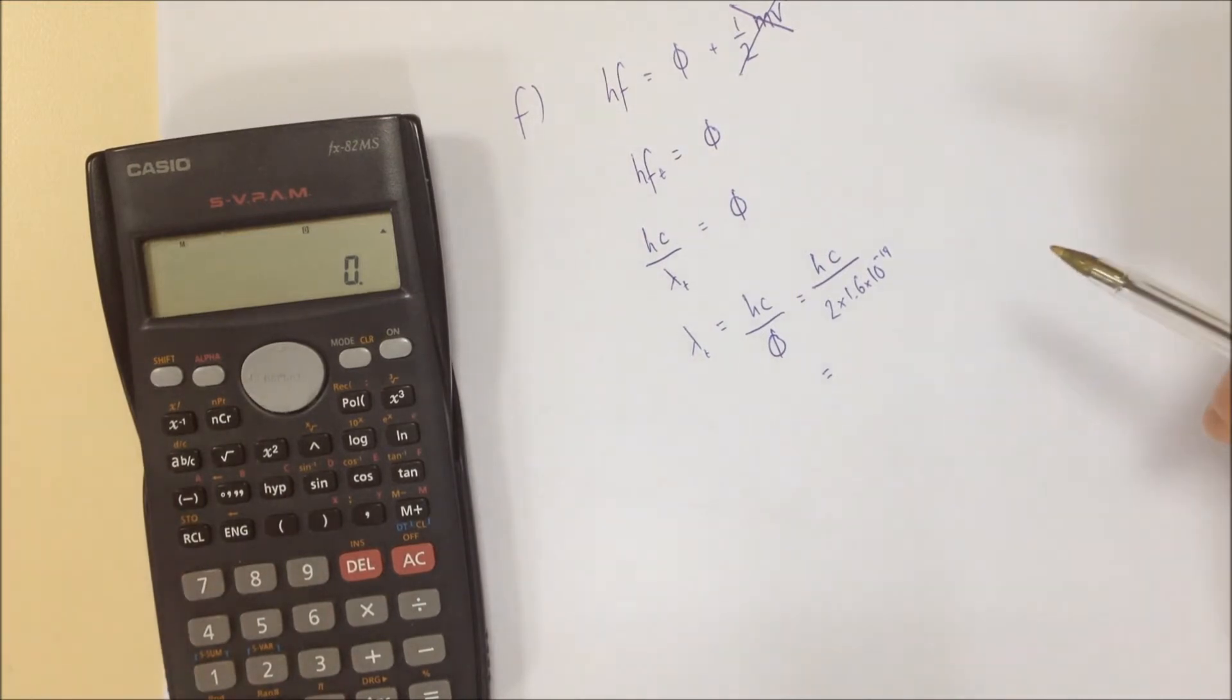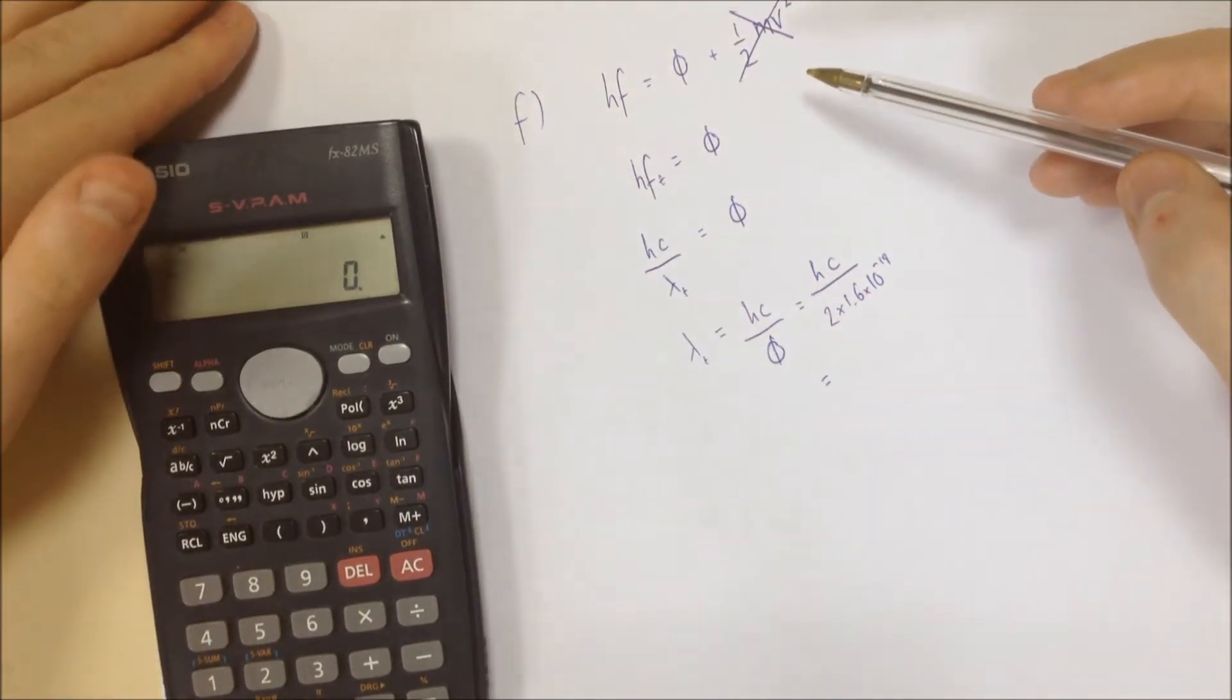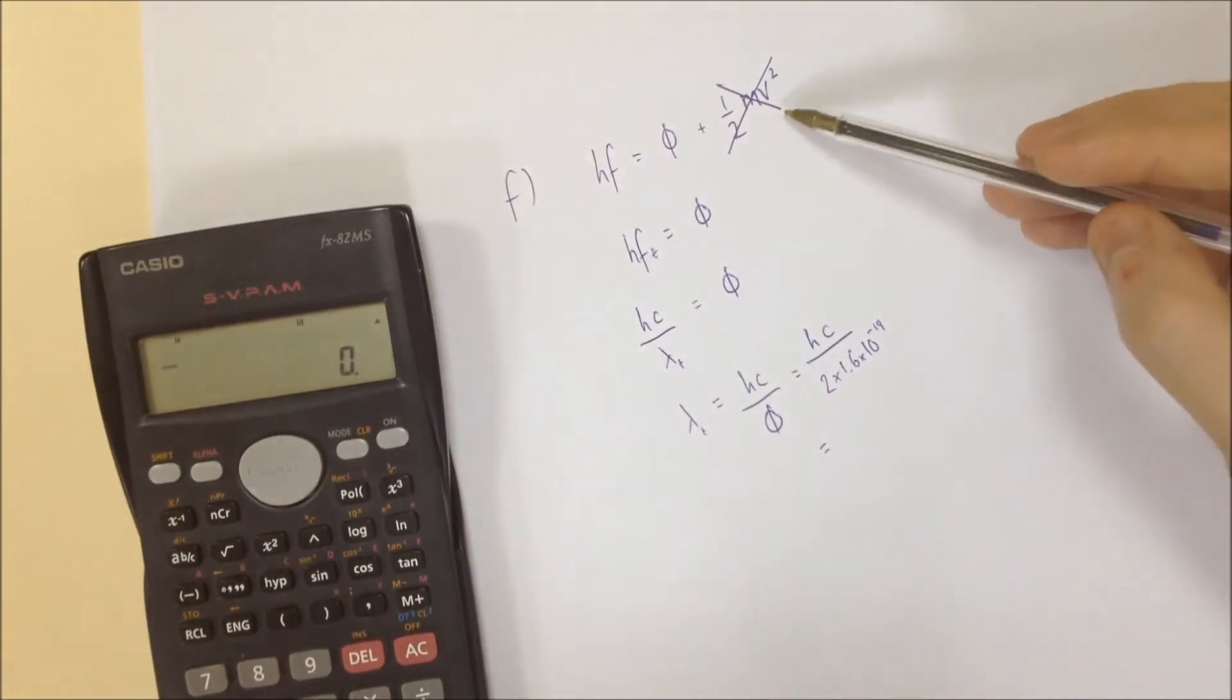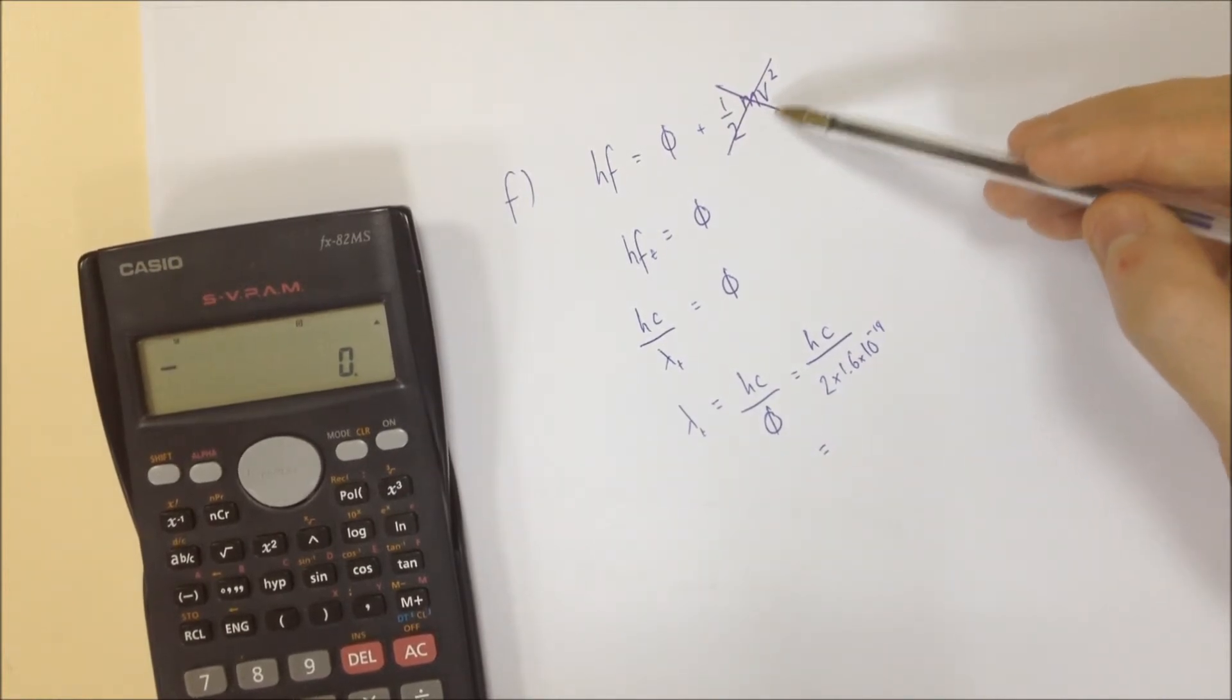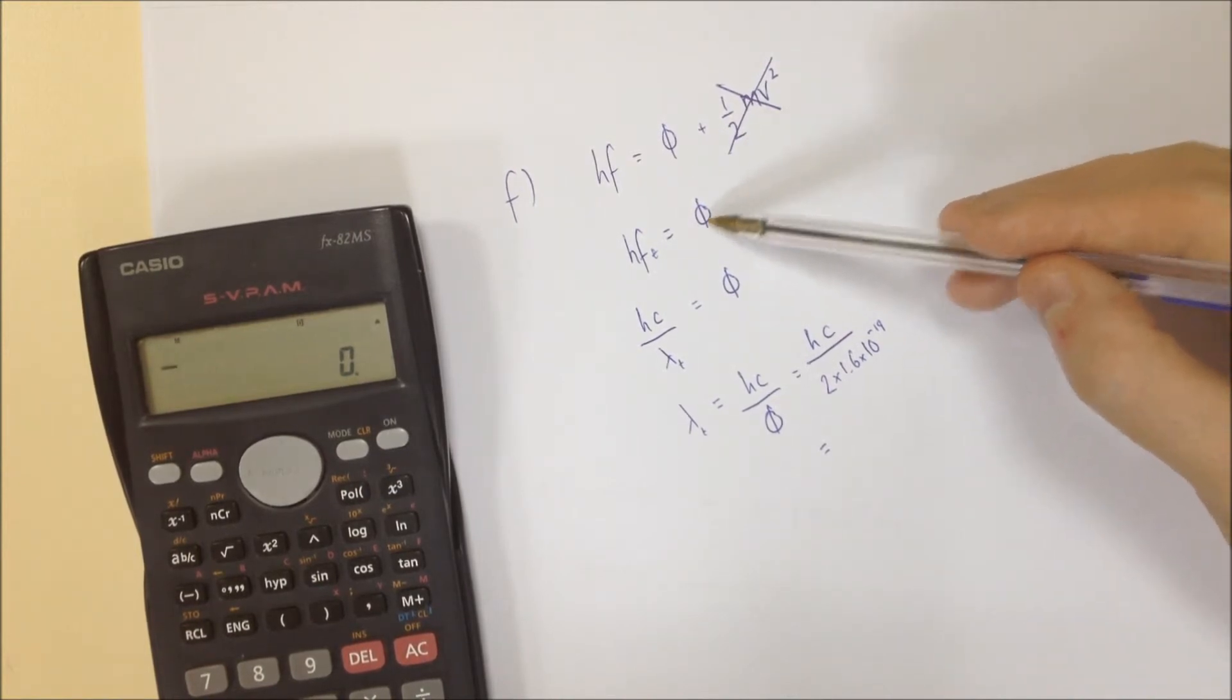Okay, so on to part F. We're going to use this equation again. HF equals phi plus half mv squared. However, let's just shift that down slightly. There's no kinetic energy because part F is all about the threshold frequency. Well, I actually asked about the threshold wavelength, but the two are kind of similar. So we get this equation here with threshold frequency,